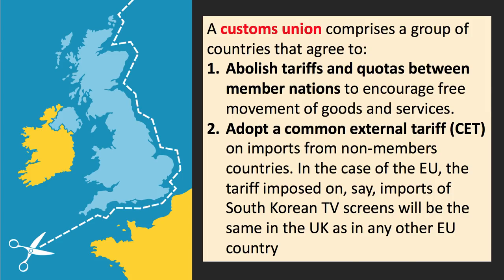A quick reminder of what a customs union is — you need to define that term very precisely. It's where a group of countries agree to abolish import tariffs and import quotas between member nations to encourage free trade and free movement of goods and services. Crucially, they also adopt a common external tariff (CET) on any imported products from non-members. In the case of the European Union, for example, the tariff on LCD screens from South Korea will be the same in the UK as in any other EU country whilst the UK is part of the customs union.